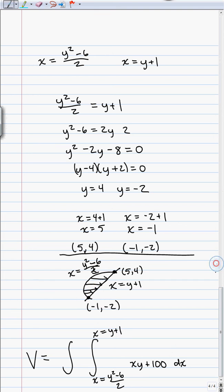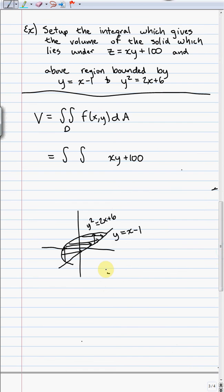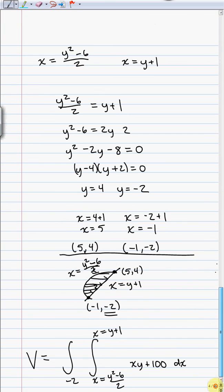And then to cover this entire region, we need to go through all the y values. Well, y starts down here at negative 2. And we're going to continue up to the top. y is equal to 4. So again, notice that the outer bounds, the y's, are fixed numbers, negative 2 to 4. The inner bounds can be functions. x is equal to y squared minus 6 over 2 up to x is equal to y plus 1.